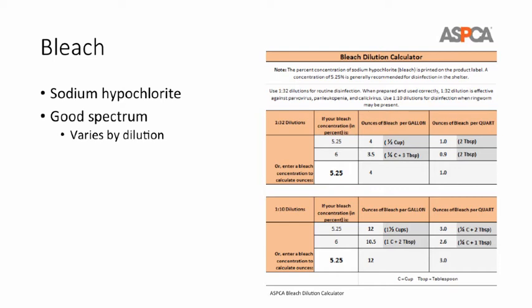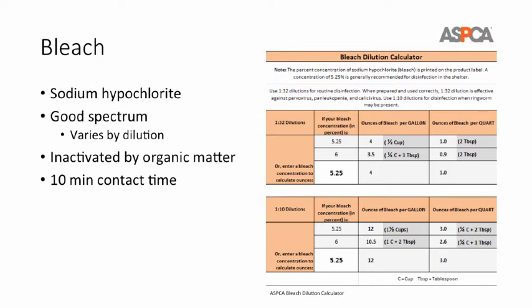When you dilute bleach, remember it's only stable for about 24 hours, so it needs to be remade every day. Use it in the morning and again at the end of the day for a second round of cleaning, but during that time keep it in a dark area — a cabinet is best — because light can inactivate it. Bleach is also readily inactivated by organic matter, so it's really important that a detergent is used first. Spraying bleach on poop really won't do much. It does have a ten-minute contact time for both the 1:10 and 1:32 dilutions.